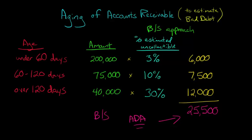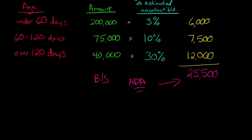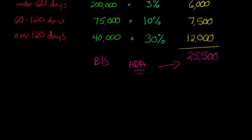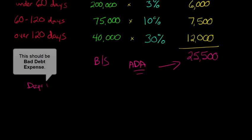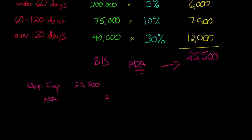Now, here's the catch with this aging method. We can't just go and say, okay, well let's go and make an entry for bad debt expense, and then we'll credit allowance for doubtful accounts, and we'll just do 25,500 and 25,500. Now, we can't just go and immediately do that, and the reason is that there might already be a balance in ADA. And what do I mean by that?